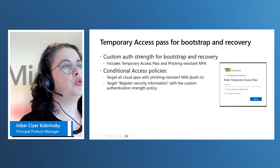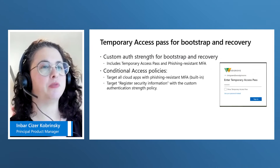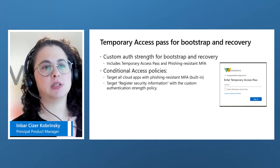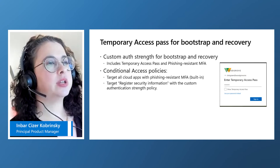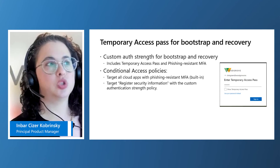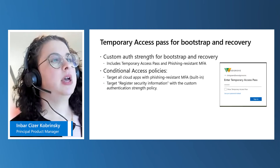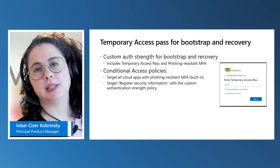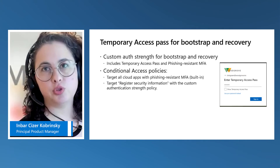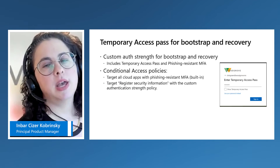Let's deep dive into using temporary access pass for bootstrap and recovery. Without additional restrictions, temporary access pass can be used across all resources protected by Entra. However, customers like the idea of using it only for bootstrap and recovery. To enable that, they create one policy allowing phishing-resistant authentication across all applications, and specifically for security info, allow phishing-resistant and temporary access pass. This allows a new user on their first day to get a temporary access pass, register their phishing-resistant method, and from that point on start using those methods across the board. This is great not just for user onboarding, but also in the event someone loses access to a registered method — they can prove who they are and get back in even if they've lost access or don't have it to start with.